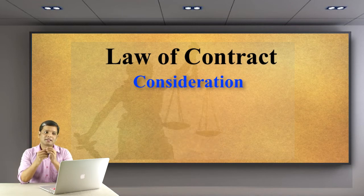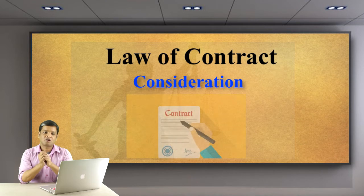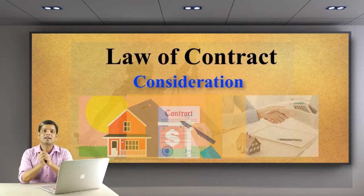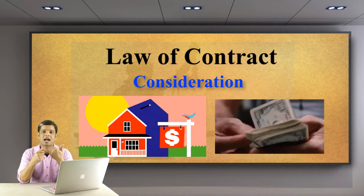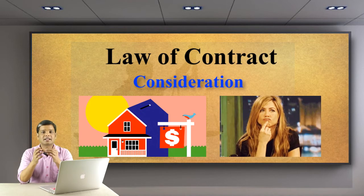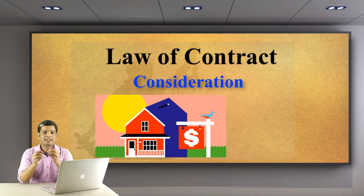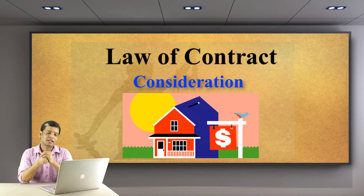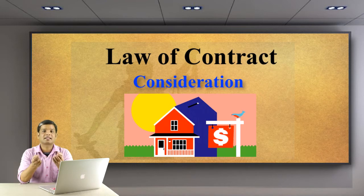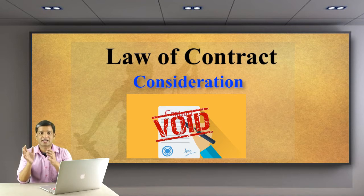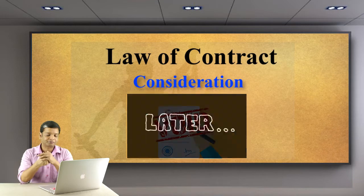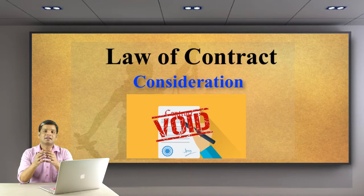For example, if you are making a contract with someone to buy his property, his property is consideration for you, and the money you will pay to him is consideration for him. So it is a mutually beneficial thing. Consideration refers to the interest and benefit essentially involved in a contract. Without consideration, a contract is void, though there are exceptions we will discuss later.